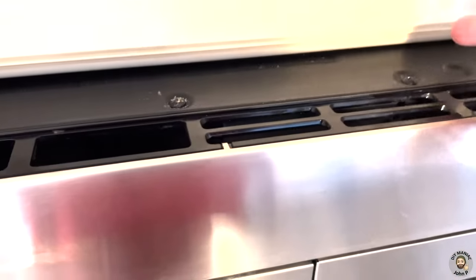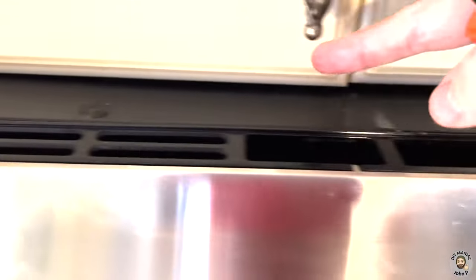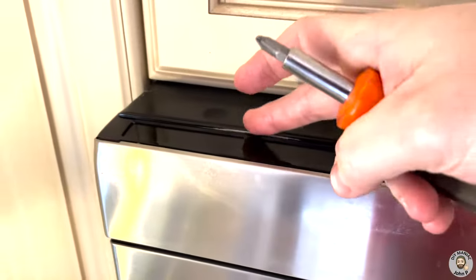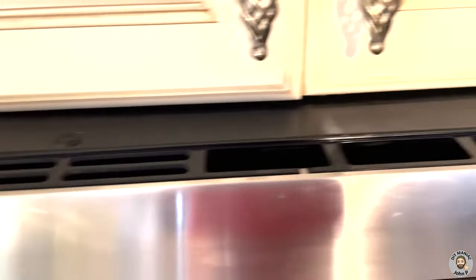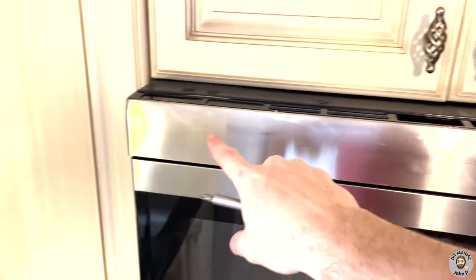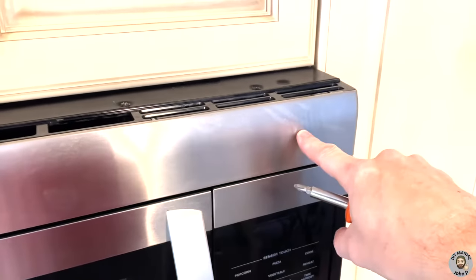First thing we're going to do is, if we come on top of the range, you're going to look here, and we have one, two, three, four Phillips screws. We're going to remove those, and that's going to allow us to take this top portion off.